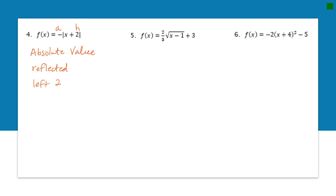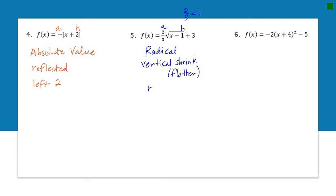For number five, this is the radical family since I can see a radical. I have an a value of two-thirds. Two-thirds is less than one, so that means this is going to be a vertical shrink, making the graph flatter than the parent graph. I also have an h value of minus one — remember, that's the opposite — so it shifts right one. And I have a k value of three; k signs are the same, so it shifts up three.